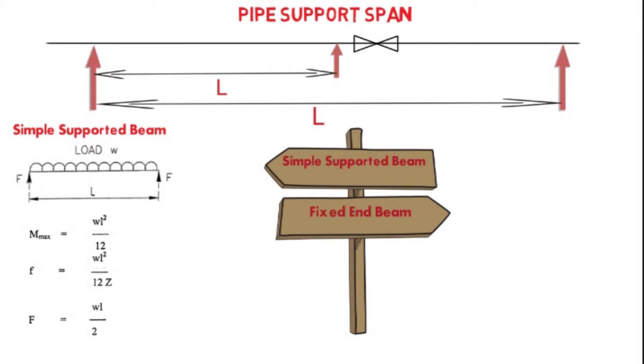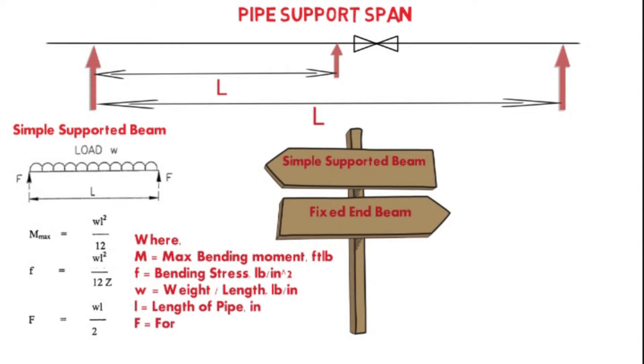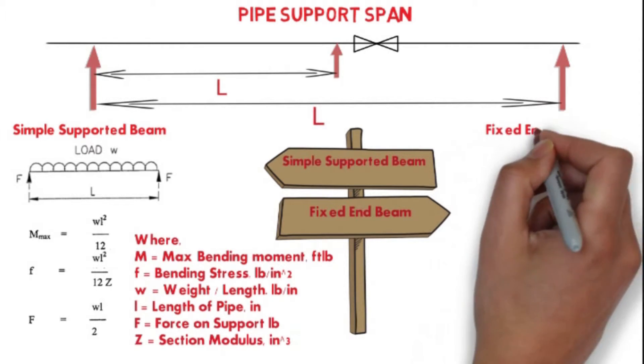In this formula, capital M is maximum bending moment and small f is bending stress, where small w is the weight per unit length and L is equal to length of the pipe. Capital F is force on the support, and Z is section modulus.